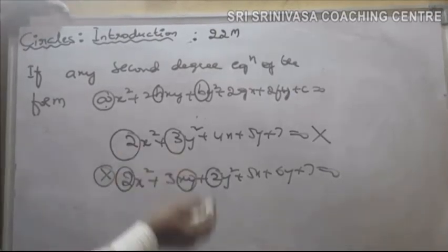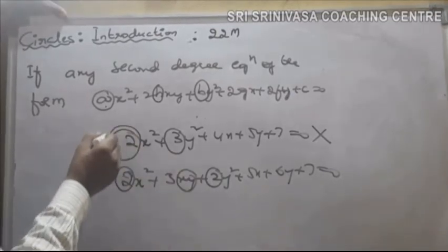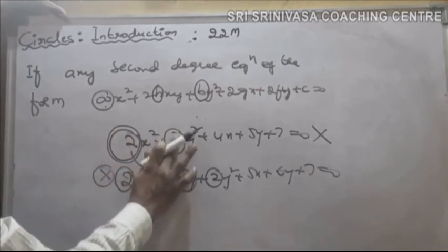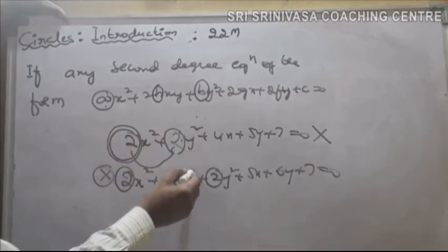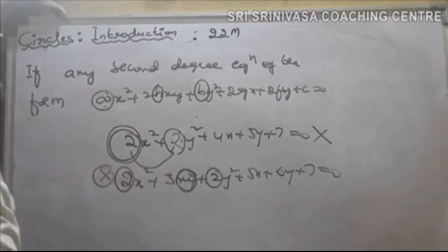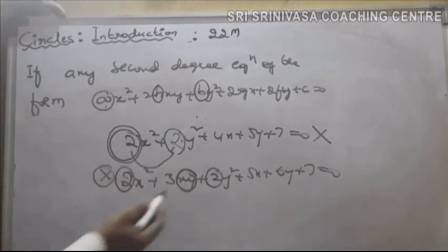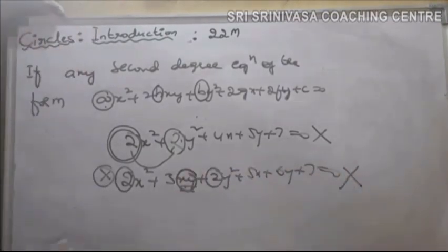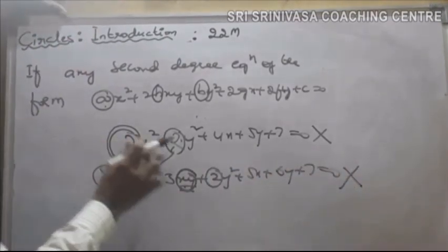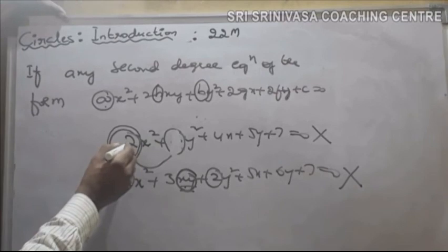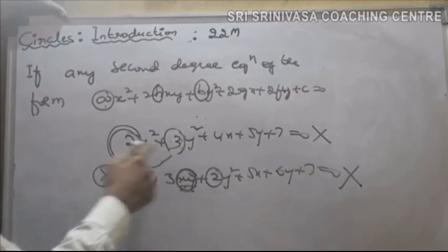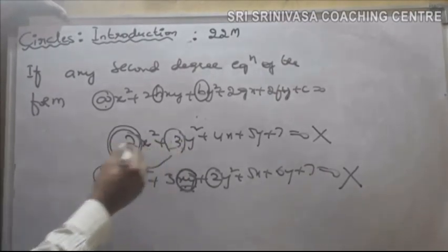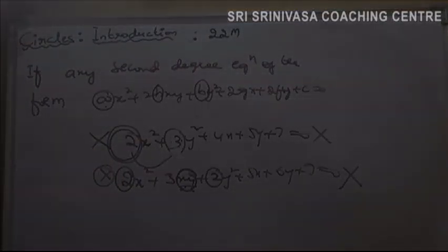So just remember: if it is a circle, the coefficient of x square should be equal to the coefficient of y square, and the xy term should not be present in the given second degree equation. If the xy term is present, that is not a circle. If the coefficient of x square is not equal to the coefficient of y square — like 2 is not equal to 3 — then again this is not the equation of a circle.